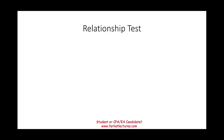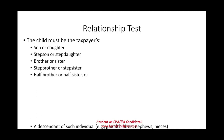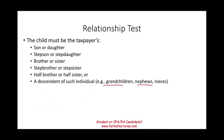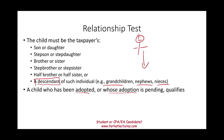Starting with the relationship test: the child must be your son or daughter, but they could also be your stepson or stepdaughter, your brother or sister, stepbrother or stepsister, half-brother or half-sister, or a descendant of such individuals — grandchildren, nephews, and nieces. Notice it's people below you; you cannot have your parents or grandparents. A child who has been adopted or whose adoption is pending qualifies as well, and a foster child may also qualify.